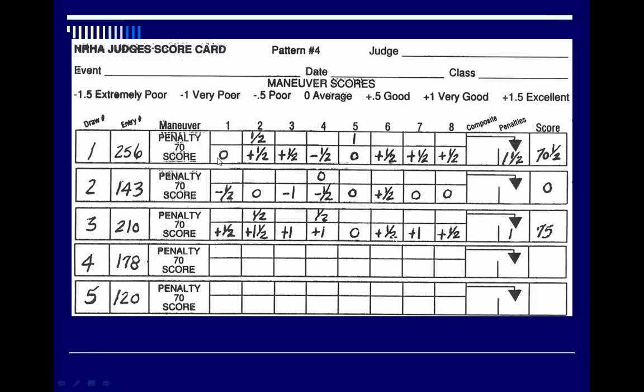Here's a completed scorecard example. Maneuver scores range from plus one-half up through plus one and a half, and from minus one-half to minus one and a half based on quality. Penalty points are only recorded if they occur — you don't need to put a minus there since they're always negative. All scores are added or subtracted from 70. This horse ended up with a 70 and a half — you can cancel positives and negatives against each other to simplify the calculation.